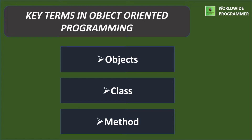Key terms of object-oriented programming. First one is object. Objects are the runtime entities in an object-oriented system. They may represent a person, a place, a bank account, a table of data, or any item that a program has to handle. They may also represent user-defined data such as vectors, time, and lists. Object occupies space in memory. Every object has its own property or features. When a program is executed, the objects interact by sending messages to one another. For example, if a customer and account object is requesting for the bank balance, each object contains data and code to manipulate the data.